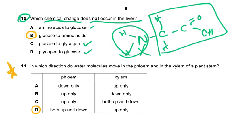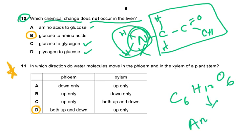Which chemical change does NOT occur in the liver? Glucose cannot be converted to amino acids. Glucose is C₆H₁₂O₆ and has no nitrogen — amino acids require a nitrogen-containing amino group, so there's no source of nitrogen. Glucose can be converted to glycogen and to fats, but glucose to amino acids simply cannot happen.